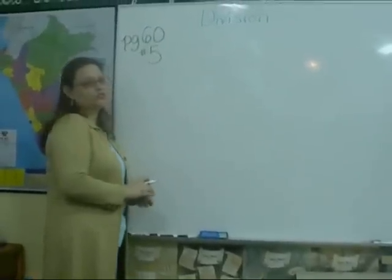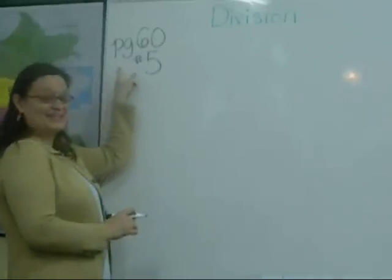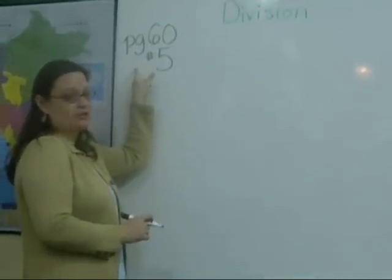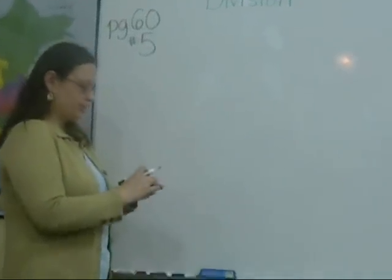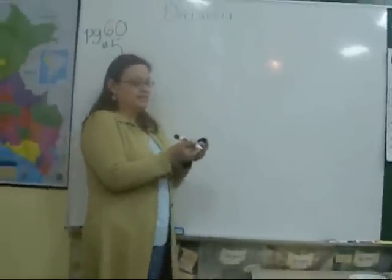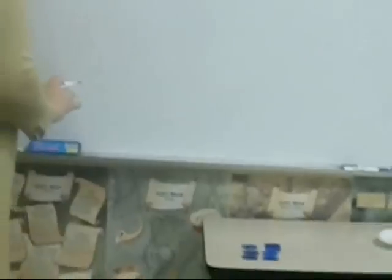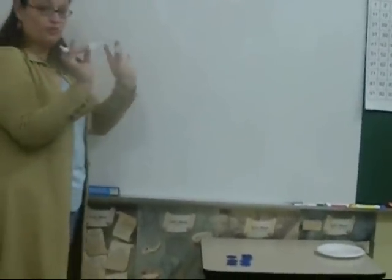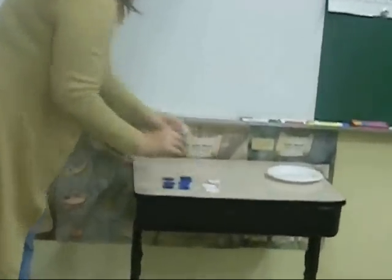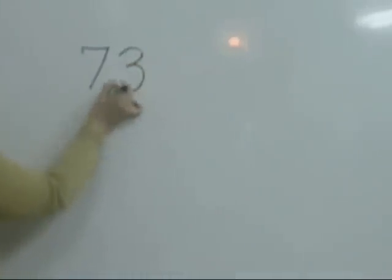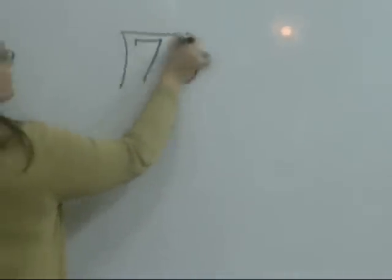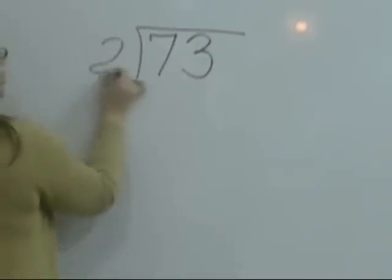We're going to do a problem from the textbook. It's on page 60, number 5. We're going to divide 7 tenths — 1, 2, 3, 4, 5, 6, 7 tenths — and 3, 1. So we're going to divide 73 divided by 2.